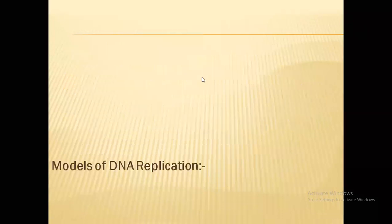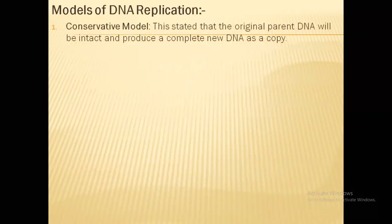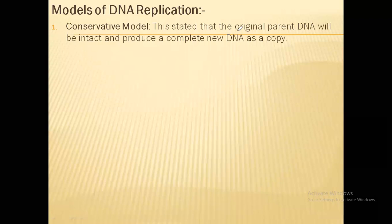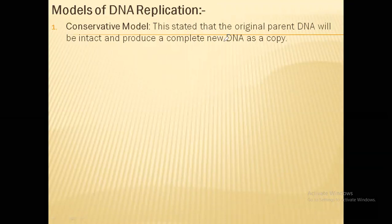There are actually three different models of DNA replication. The first model is known as the conservative model of DNA replication. Conservative model here means the original parental strand will be completely conserved — there will not be any changes in it — but it will create a new DNA segment. There will be no change in the parental DNA, but a new DNA will be formed as a copy of the parental DNA. This states that the original parent DNA will be intact and produce a completely new DNA as a copy.